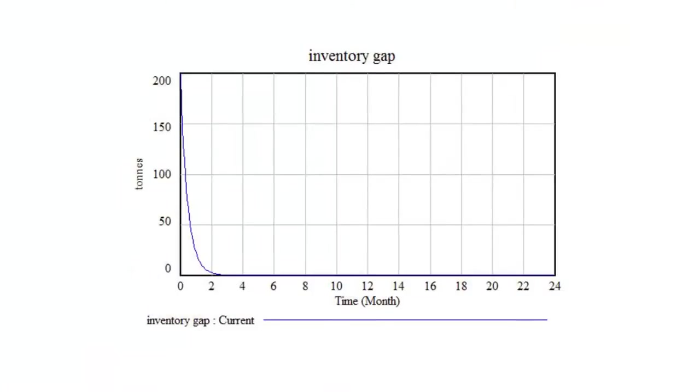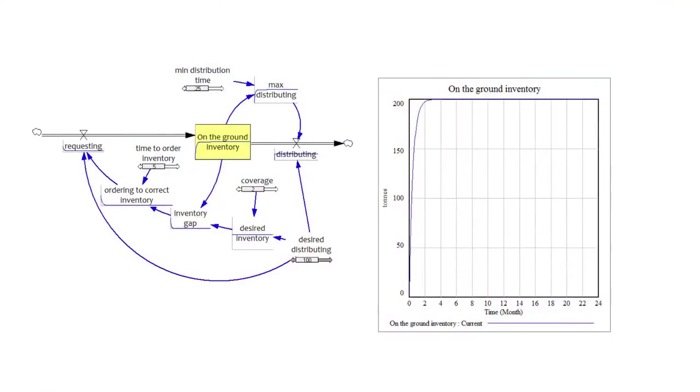And so our gap is 200. And we'll start ordering that. As we order it, the gap will get smaller, right? We're always ordering the gap, or actually the gap divided by whatever the time is that we want to get the stuff in. The gap gets smaller. We order less, but we keep ordering.